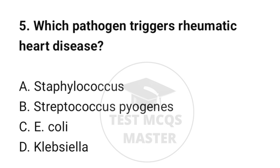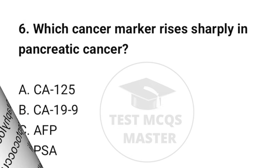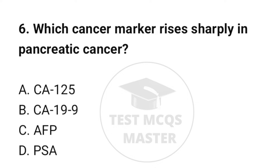Question number 5: Which pathogen triggers rheumatic heart disease? The correct option is B: Streptococcus pyogenes. Question number 6: Which cancer marker rises most in pancreatic cancer? The correct option is B: CA19-9.